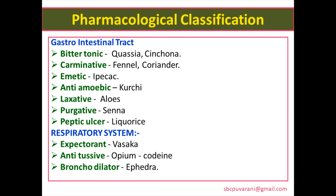Pharmacological classification: drugs are classified according to their therapeutic efficacy. Drugs acting on the gastrointestinal tract — emetic: ipecac; carminative: fennel and coriander; anti-amoebic: kuruchi; laxative and purgative: aloe and senna; lycoris is used as a peptic cell drug. Respiratory system — expectorant: vasaca; antitussive: opium, codeine phosphate; bronchodilator: ephedra.